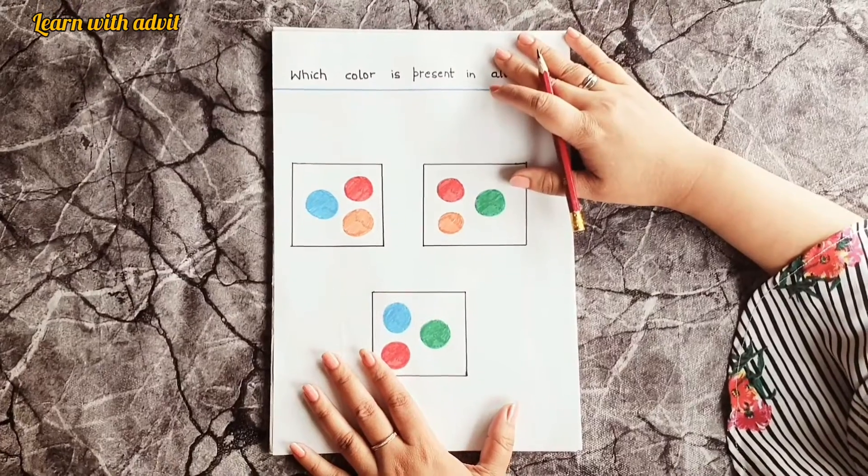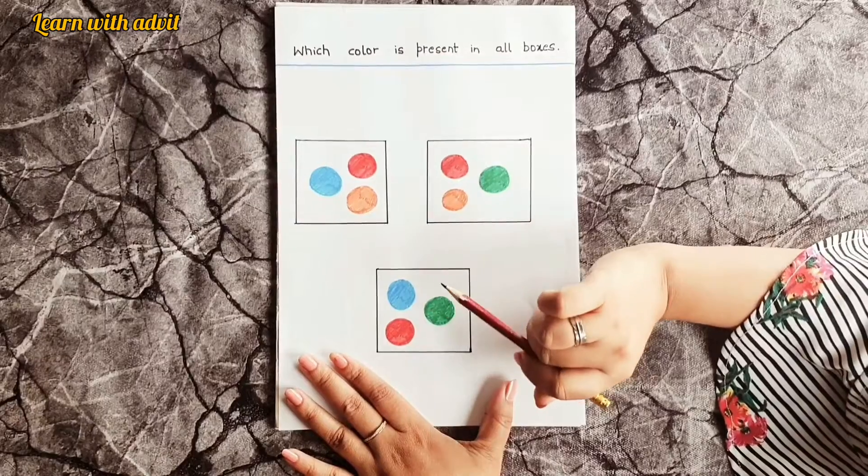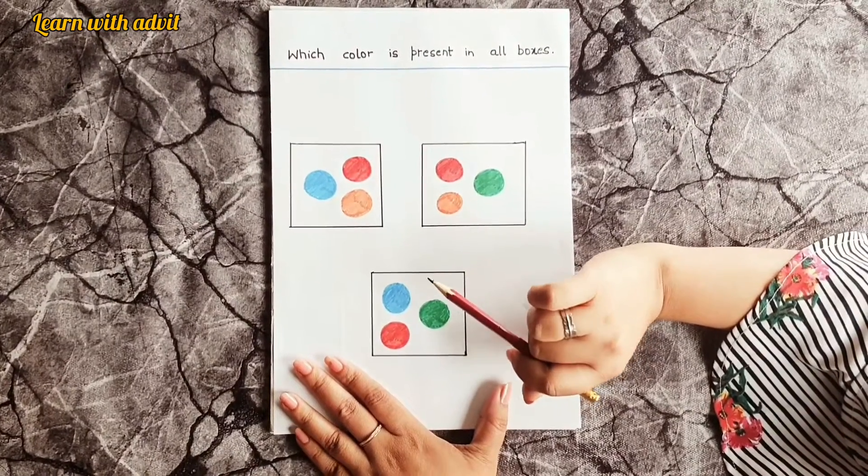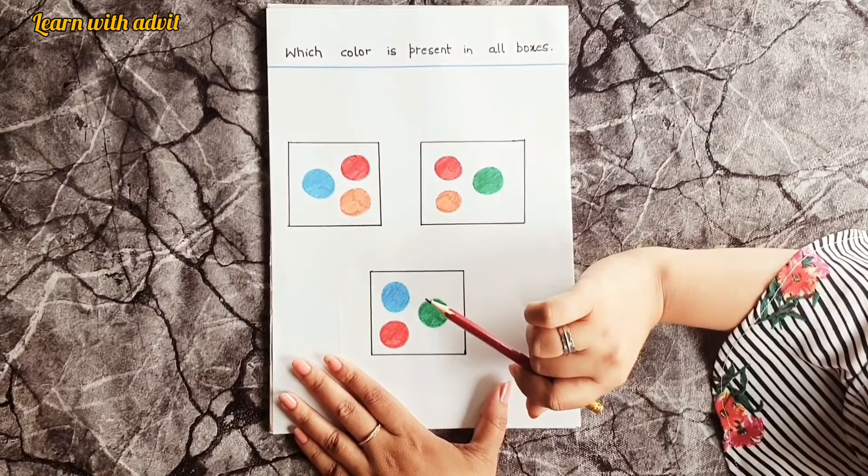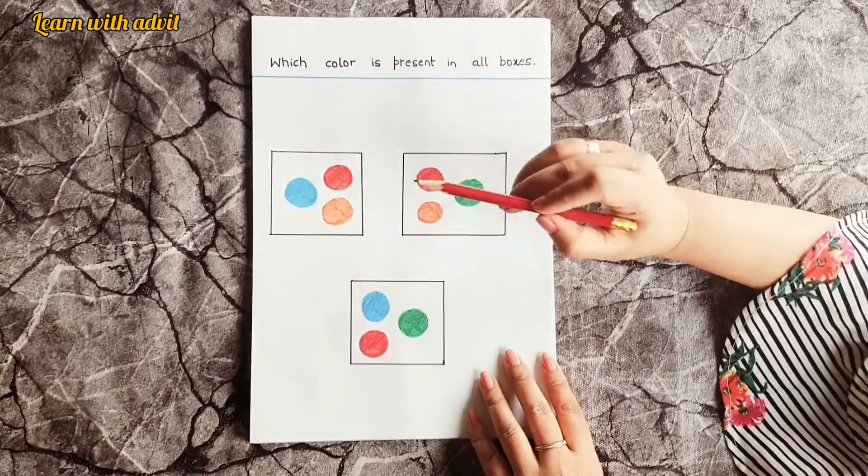So this sheet, what you have to do - I have drawn some colors inside three boxes. You have to tell me which color is present in all boxes. Look carefully and tell. You can pick one color and check it out.